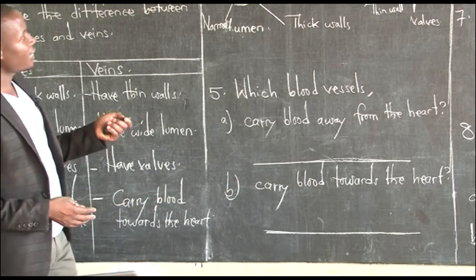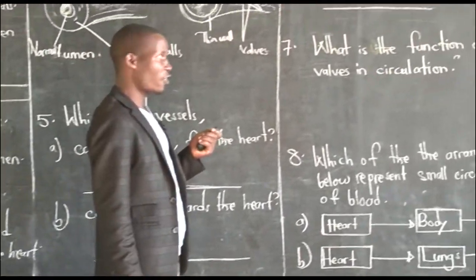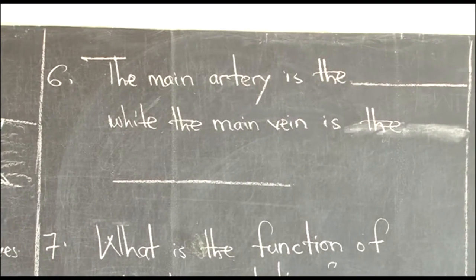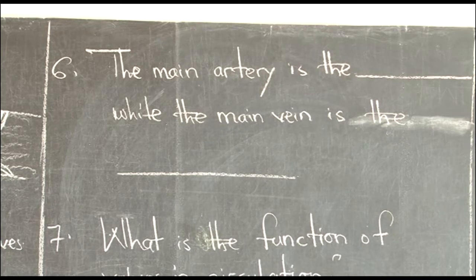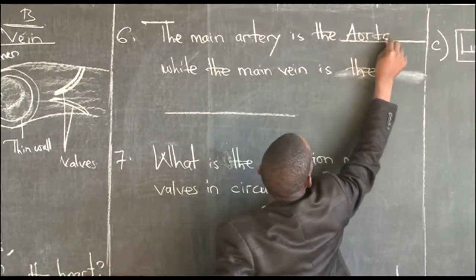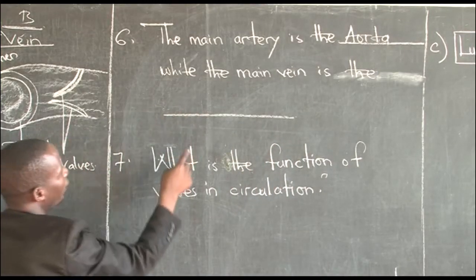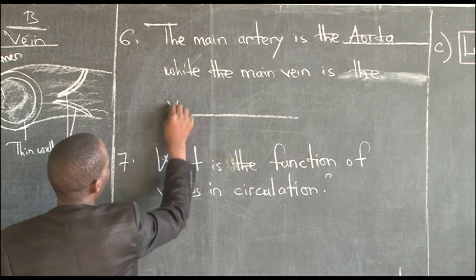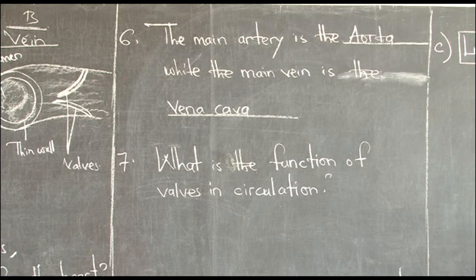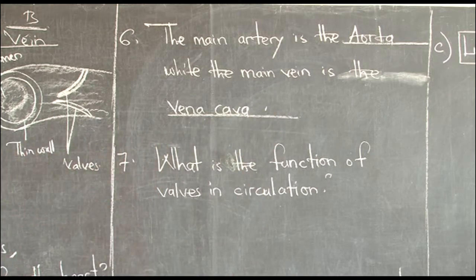Number six asks: the main artery in the body is the dash, while the main vein is the dash. We talked about this — the major artery is the aorta, and the major vein is the vena cava. So the main artery is the aorta, while the main vein is the vena cava. This is very common and we need to know it.